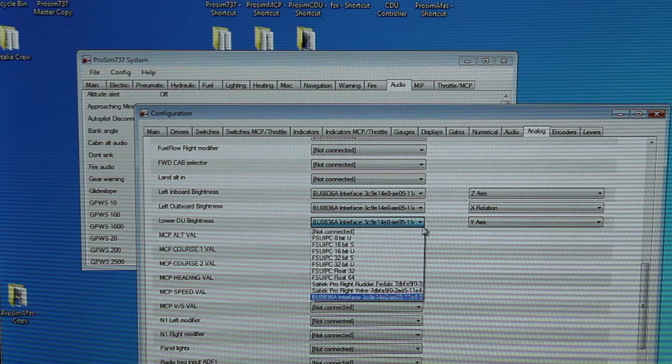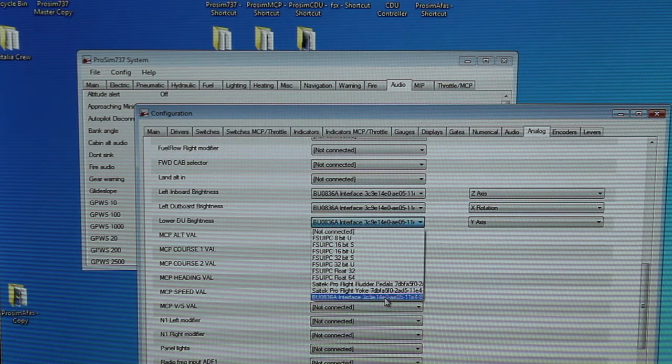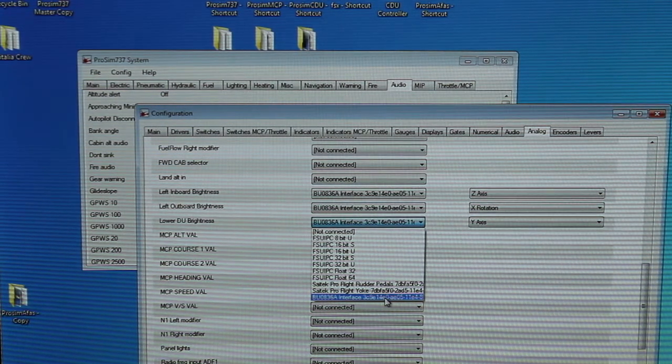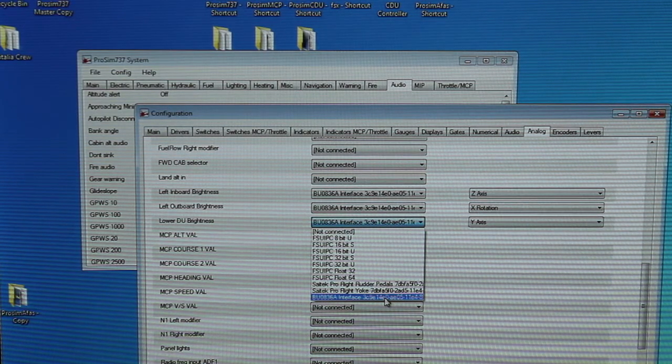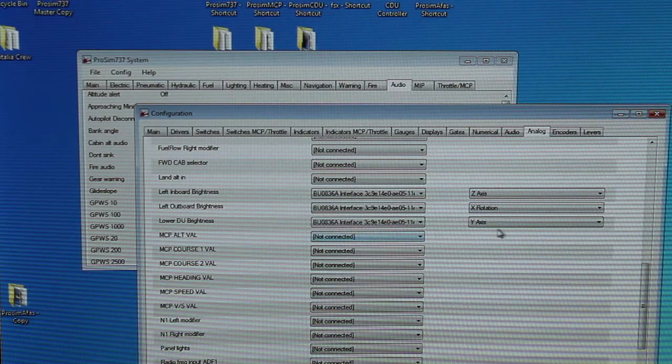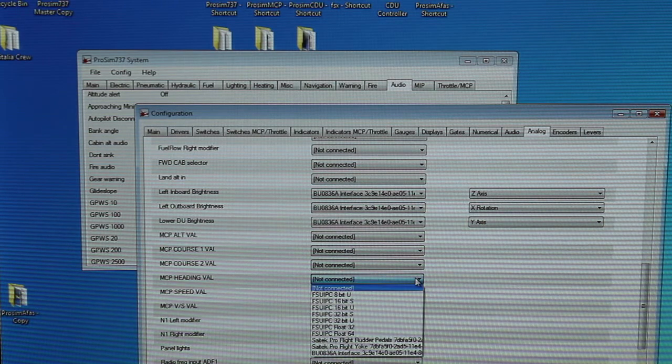So for example, the lower ECUs, the lower DU. Originally it would have said not connected, but then you drop down in the selection box here. And you will see, if you've connected the Leo Bodnar card USB to the computer where ProSim is installed, you'll see that you'll find it in the menu.